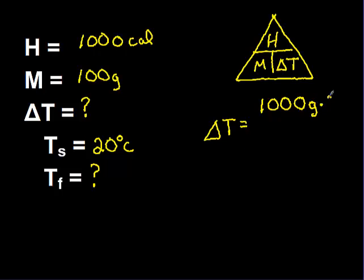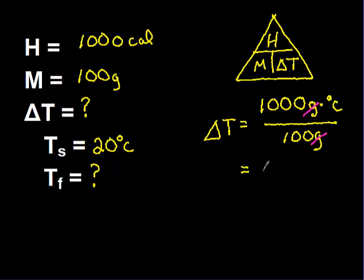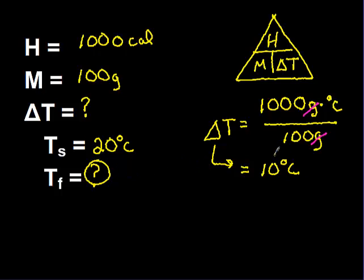On the bottom I put in 100 grams. The grams cancel out, leaving degrees Celsius. Doing the math: 1,000 divided by 100 gives me 10 degrees Celsius. But I'm not done — all this has given me is my change in temperature from applying 1,000 calories of heat. I still need to figure out what the final temperature actually is.